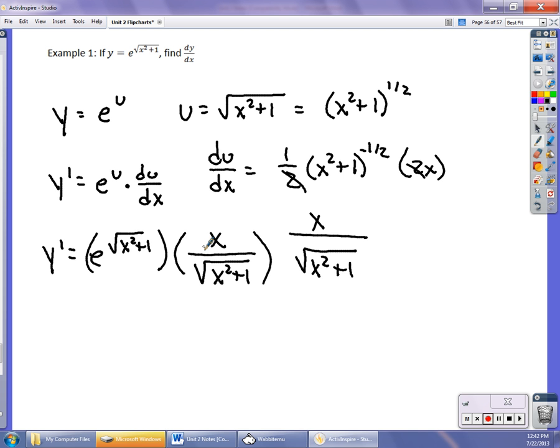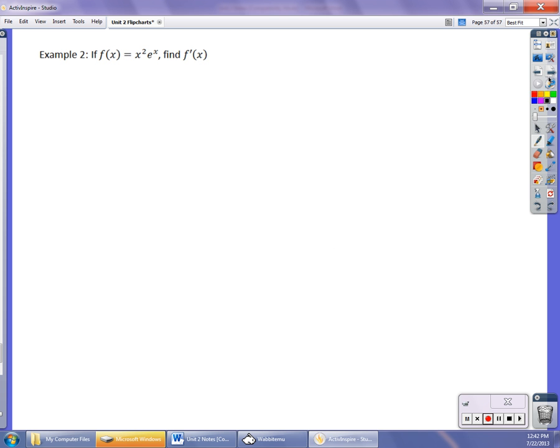You can also combine it with some of the other rules. The second one I have is combining it with product rule, where I have x squared times e to the x. So my derivative, f prime of x, I would have 2x e to the x plus x squared e to the x.